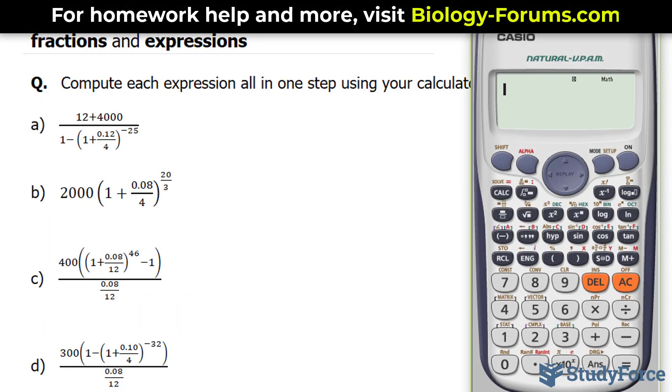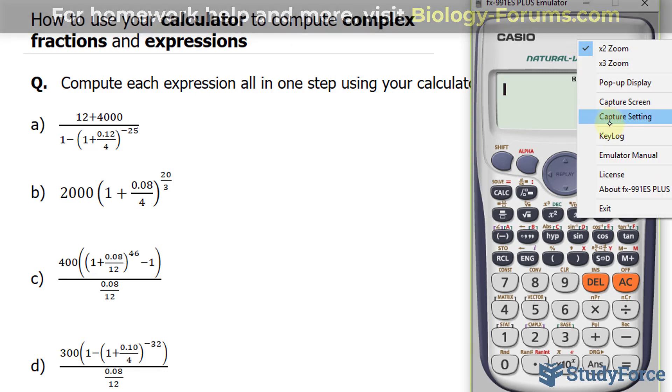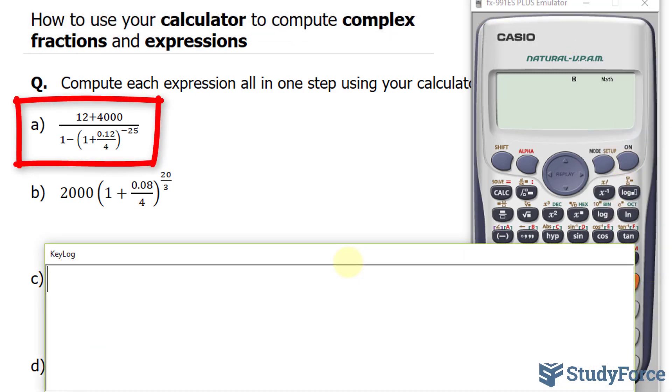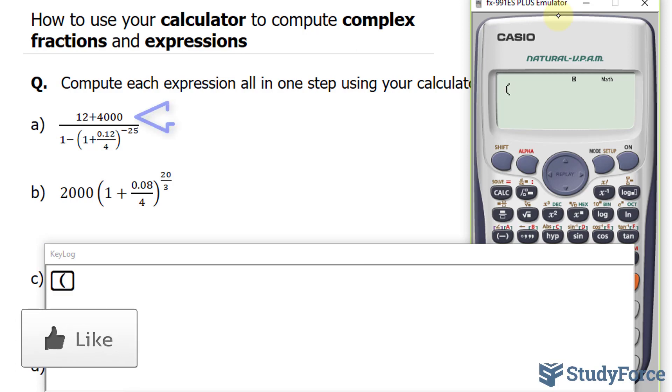Let's start with question A. Let's start by turning on our calculator. And to give you a better visual of what I'm doing, I'll insert the key log so that you can follow along. So we have a complex fraction where we have a numerator and a denominator. One of the tips that I usually share with my students is imagine that you have parentheses around the numerator and the denominator. In other words, just pretend that there are brackets around this expression and brackets around the bottom expression. That being said, I'll insert brackets.